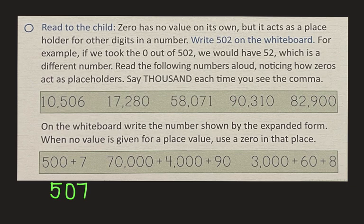For the next one, 70,000 plus 4,000 plus 90. You should have written seven, four, comma, zero hundreds, nine, zero. So we would say that 74,090.